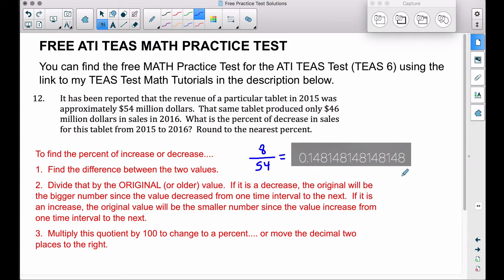When we move this decimal two places to the right, or when you multiply by 100, you're going to get somewhere around 14.8148...percent. Now let's make sure we round to the nearest percent.